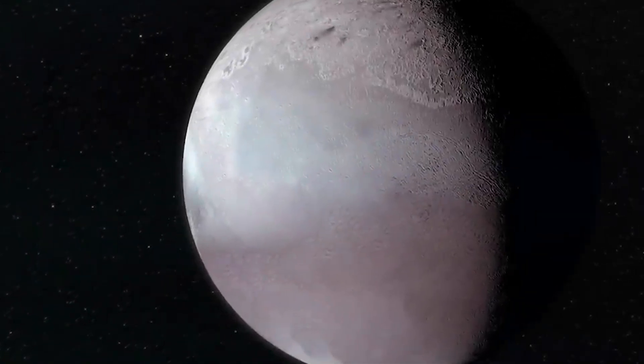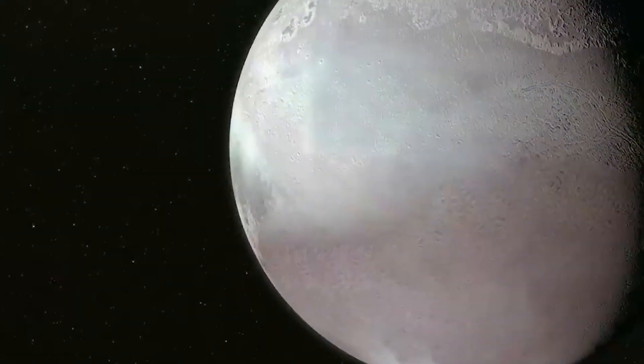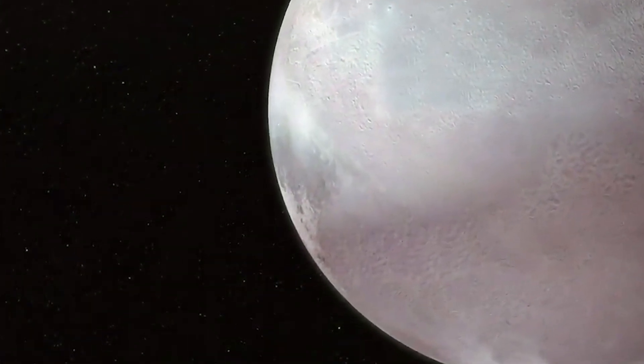Today, Neptune has a smaller number of moons compared to planets like Jupiter or Saturn, and Triton dominates the system in both size and mass.